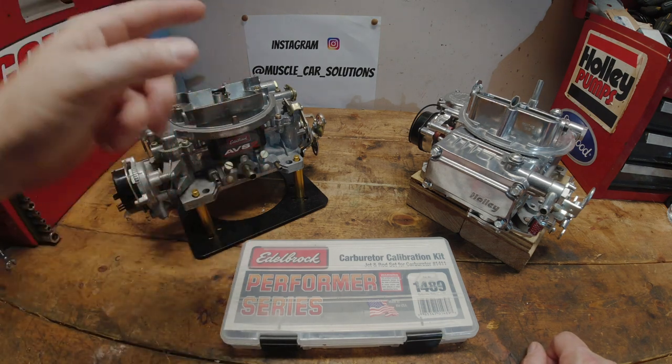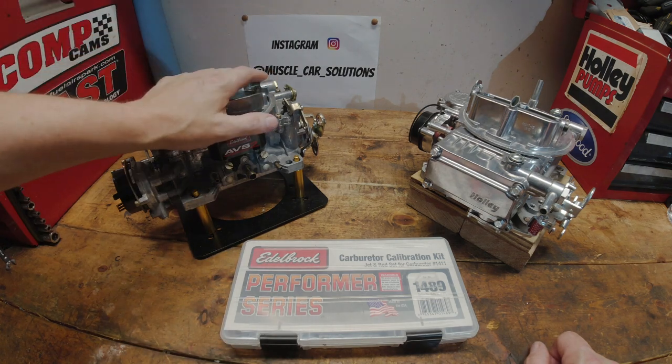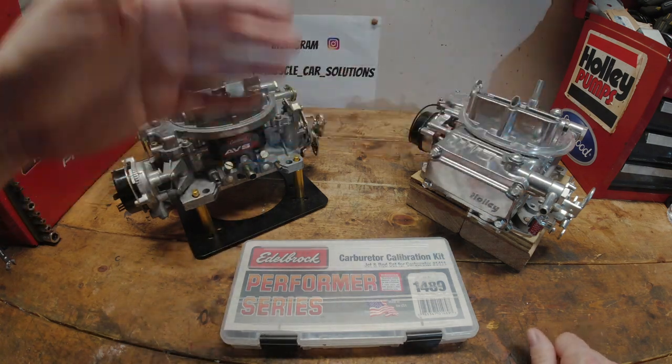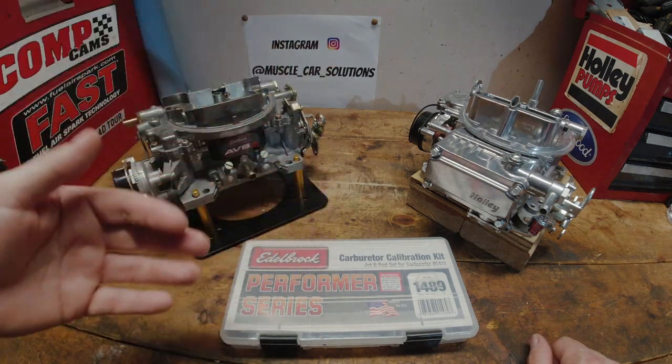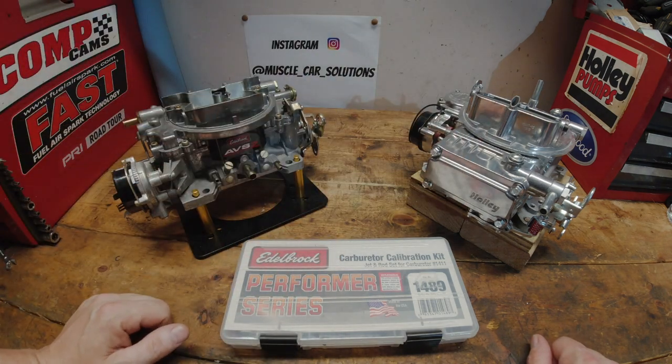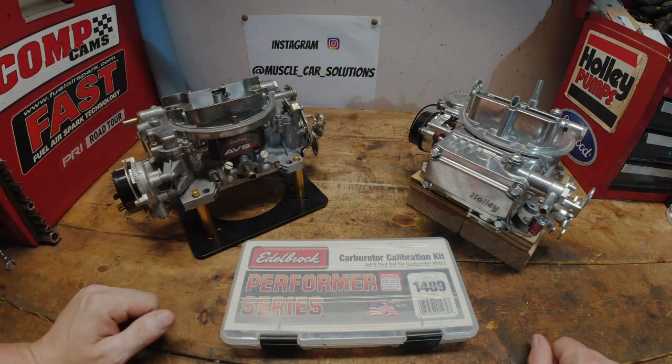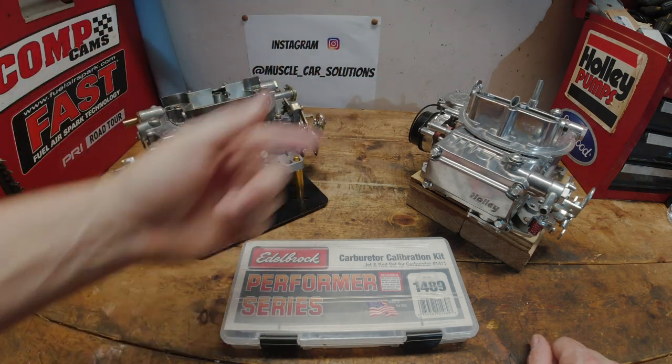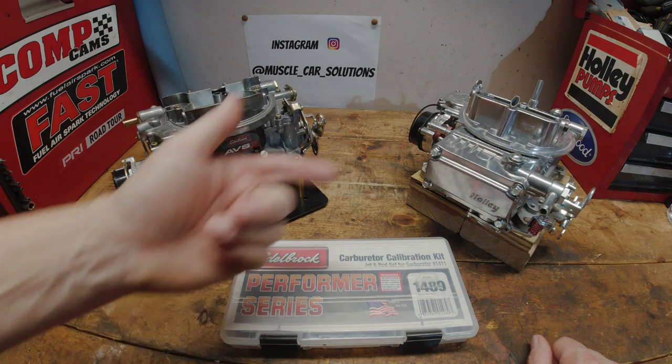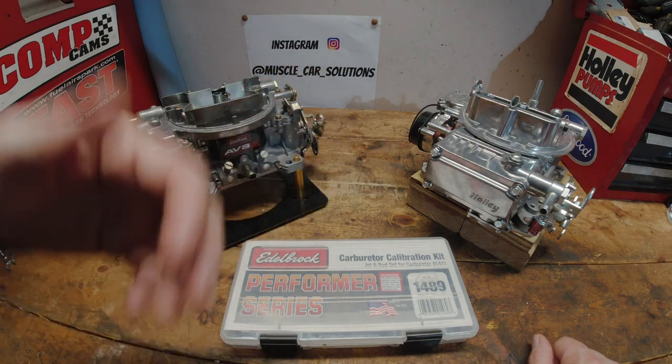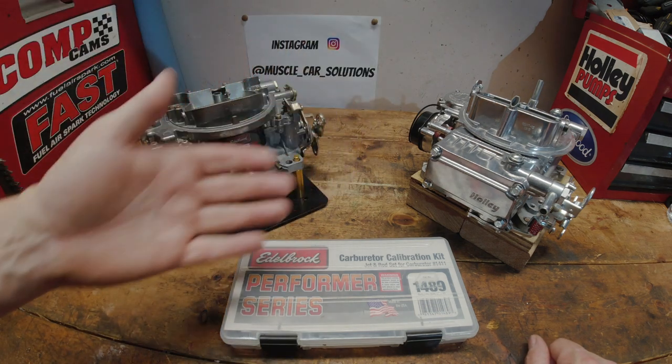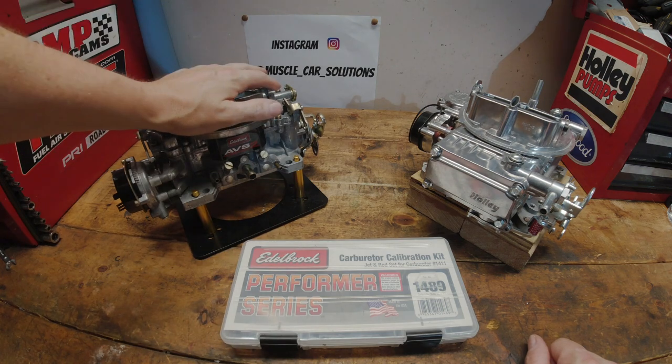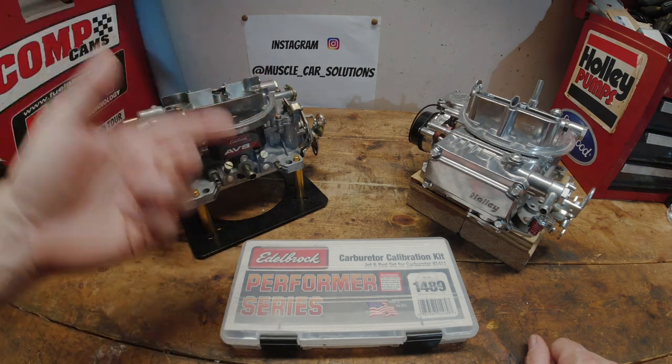So now we're going to talk specifically about how to tune on the Edelbrock. We could talk about the Holley as well, too. It's pretty much the same. You're just changing jets in that carburetor to account for it. If you've got a vacuum secondaries like this carburetor is, you may need to change the spring to bring in the secondaries a little bit slower.